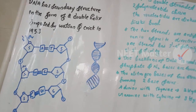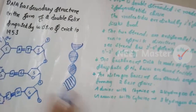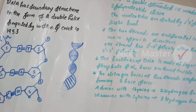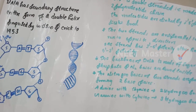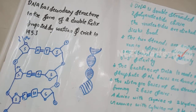DNA is double-stranded — it is a secondary structure of DNA. Two polynucleotide strands are linked together. Nucleotides are linked by 3' to 5' phosphodiester bonds. The two strands are anti-parallel, running in opposite directions.